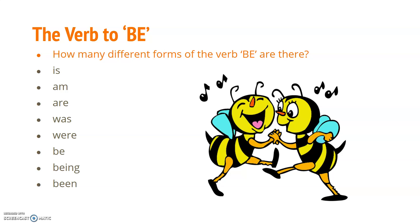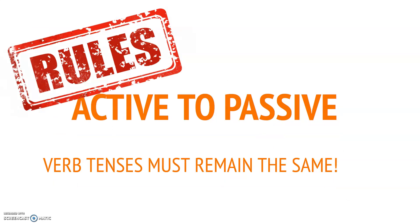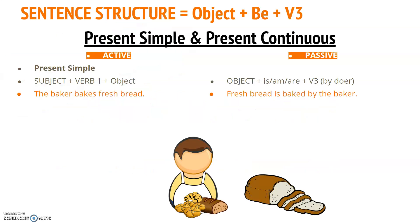There are eight forms of the verb 'to be': is, am, are, was, were, be, being, been. When using the passive voice you need to use all of these, because depending on which tense you are changing from active to passive, you need to match the appropriate form. Another important rule: verb tenses must remain the same when changing from active to passive. If it's present simple, it must stay present simple; if it's past continuous, it must remain past continuous.